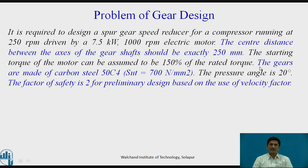In this statement, CS is given. The gears are made of carbon steel 50C4 with SUT equals 700 N per mm square. The pressure angle is 20 degrees. The factor of safety given is 2 for preliminary design based on the use of velocity factor.